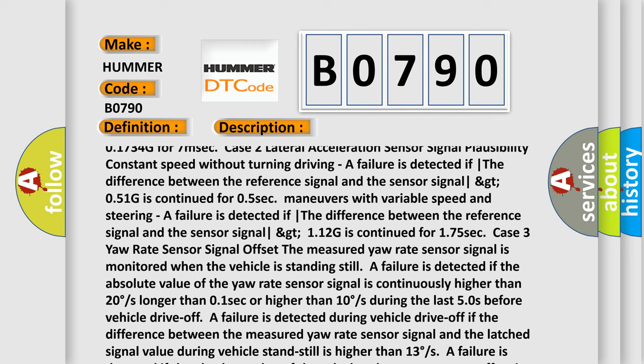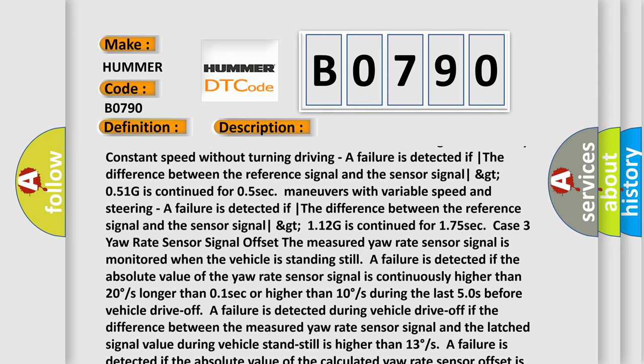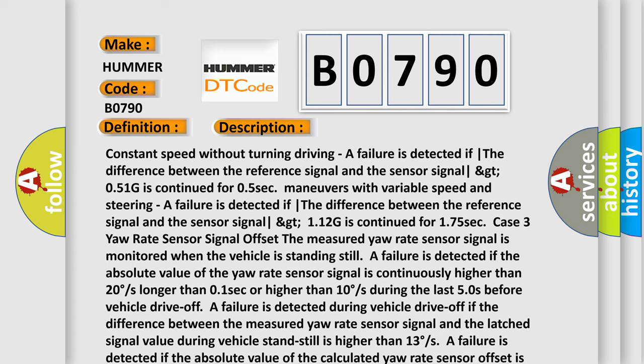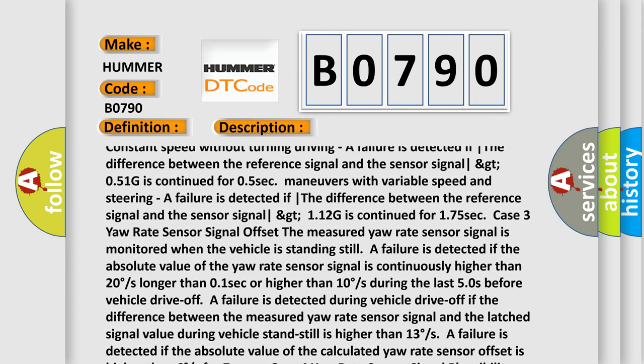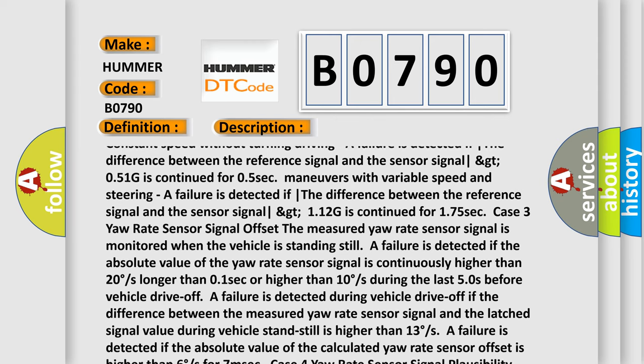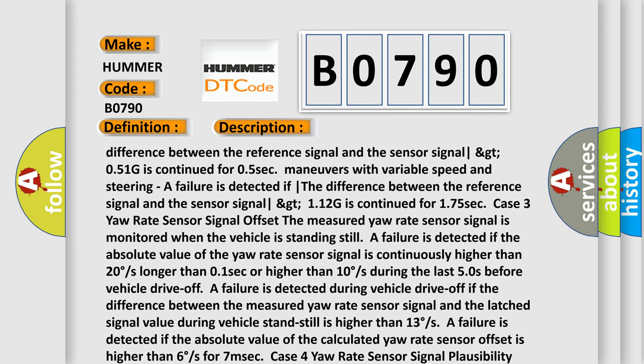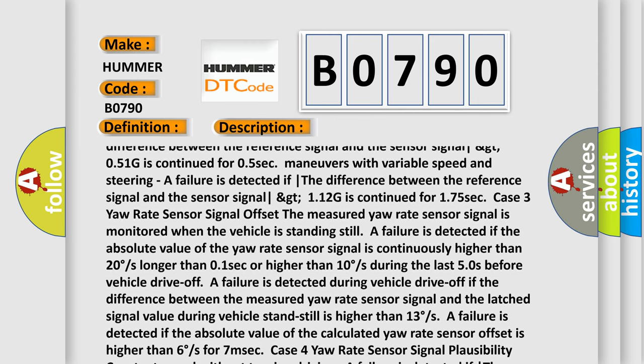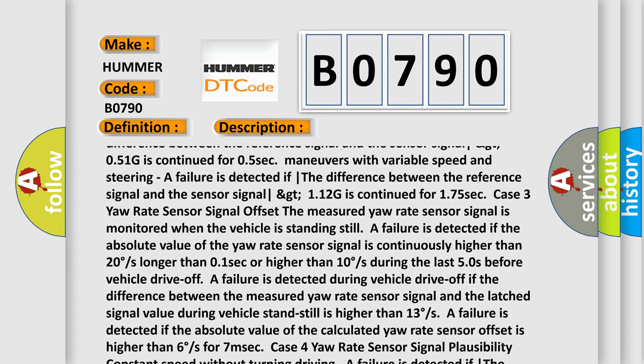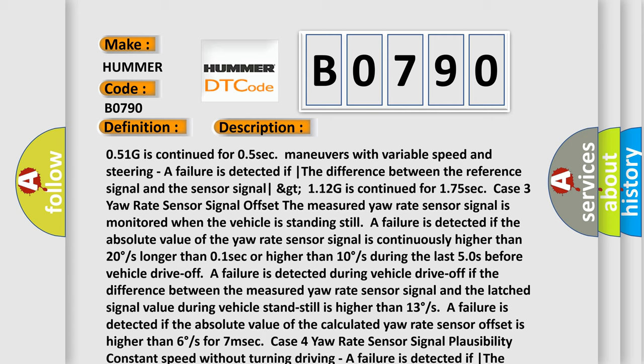Case 4: Yaw Rate Sensor Signal Plausibility. Constant speed without turning driving: A failure is detected if the gradient of the measured sensor signal greater than 540 degrees/s and the difference between the reference signal and the sensor signal greater than 10 degrees/s are continued for 0.25 sec. A failure is detected if the gradient of the measured sensor signal less than 540 degrees/s and the difference between the reference signal and the sensor signal greater than 10 degrees/s and greater than 13 degrees/s are continued for 0.25 sec.